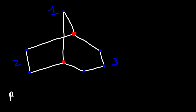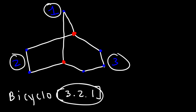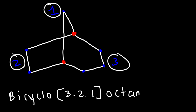So to name this compound, it's going to be bicyclo, and then in descending order: three, two, one. How many carbons do we have in this molecule? It's going to be the sum of these three numbers — three plus two plus one, which is six — plus the two bridgehead carbon atoms. So that's eight, so octane. It's bicyclo[3.2.1]octane.